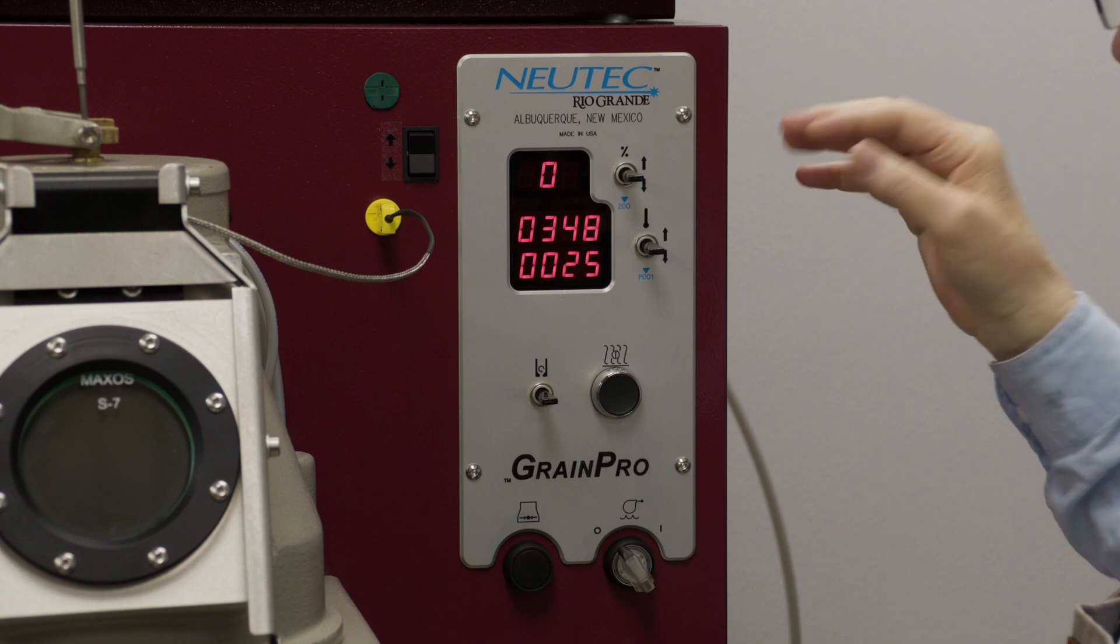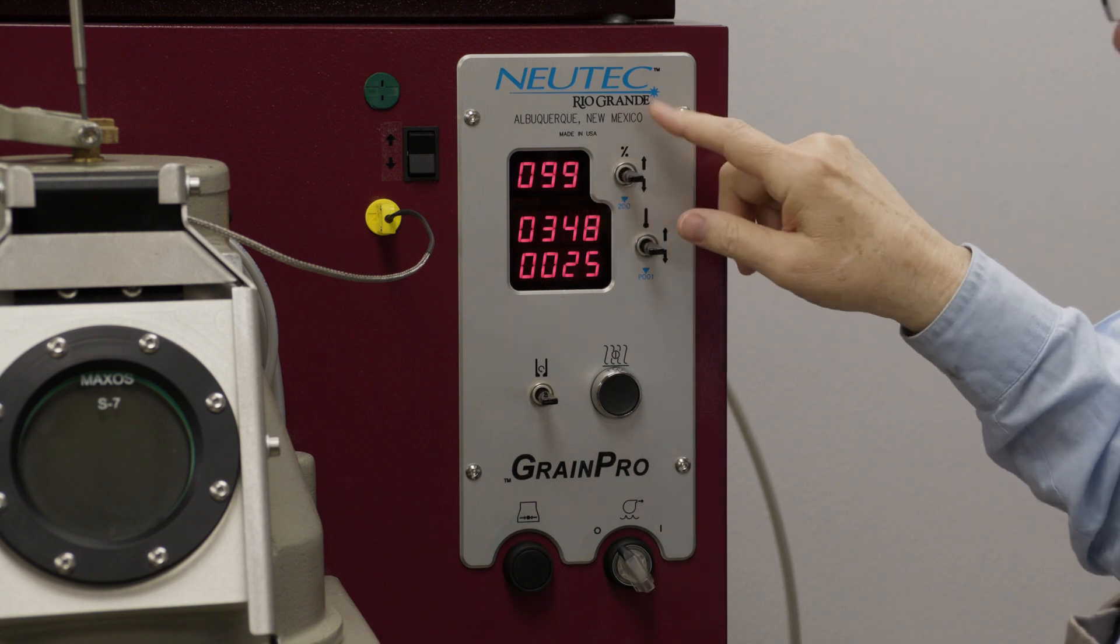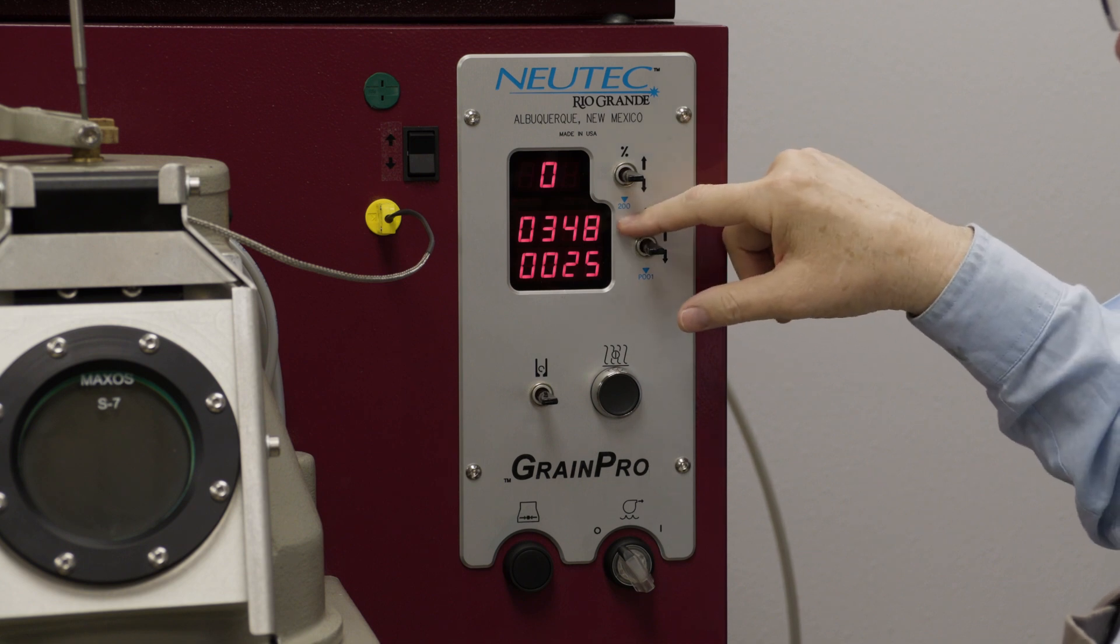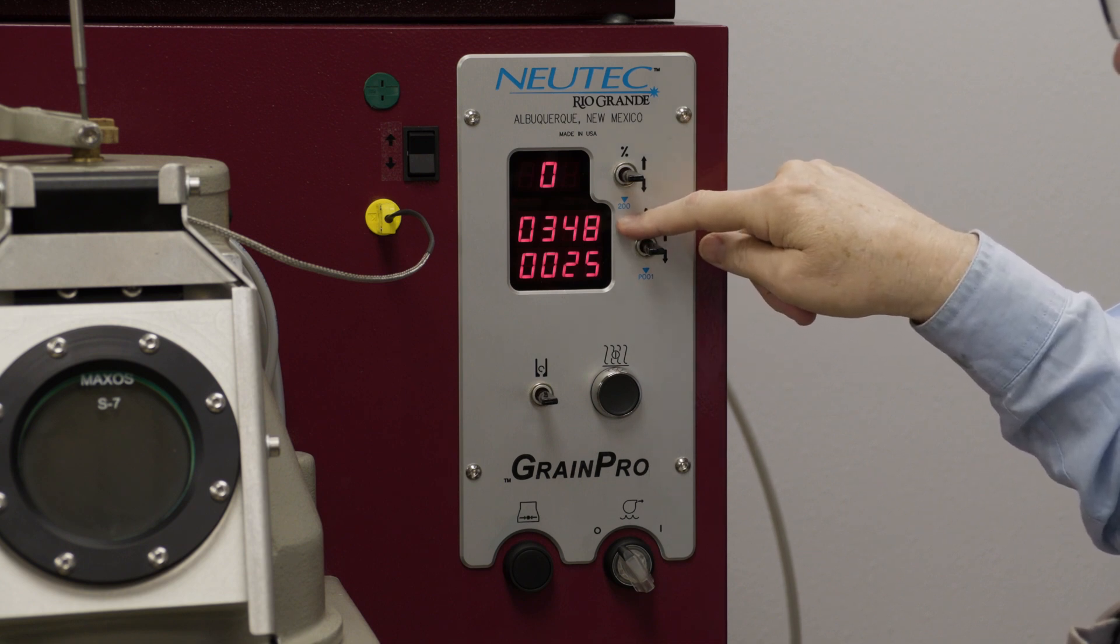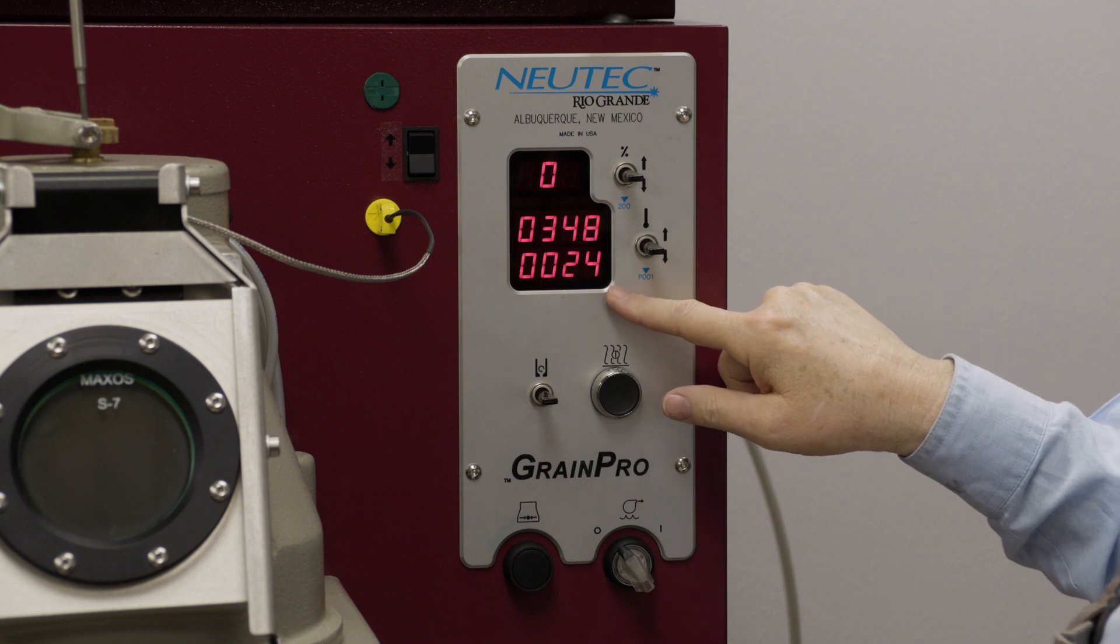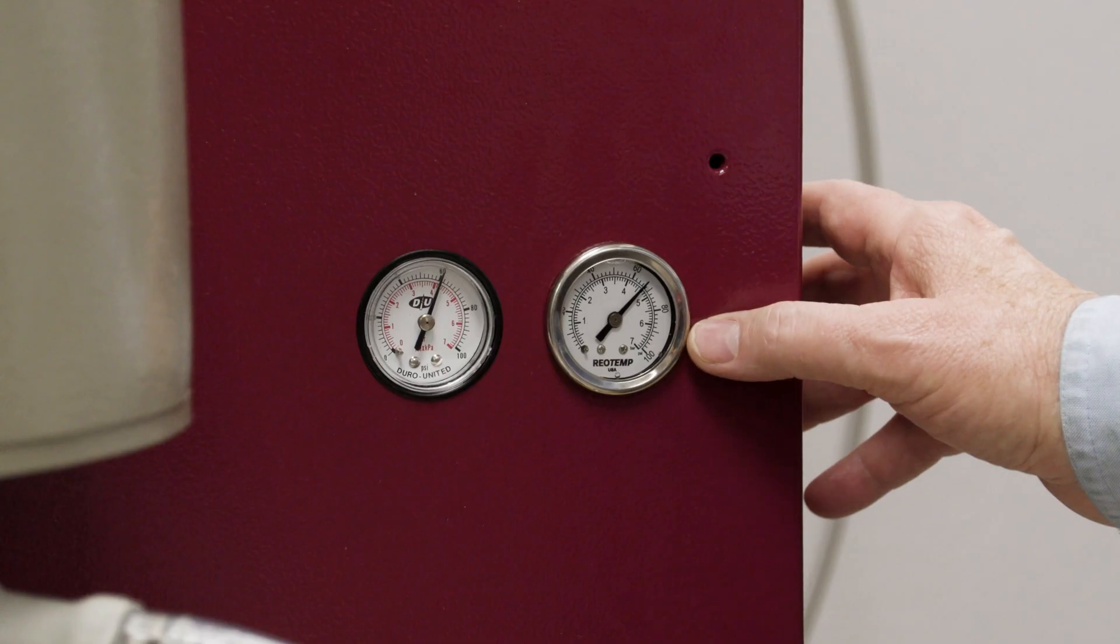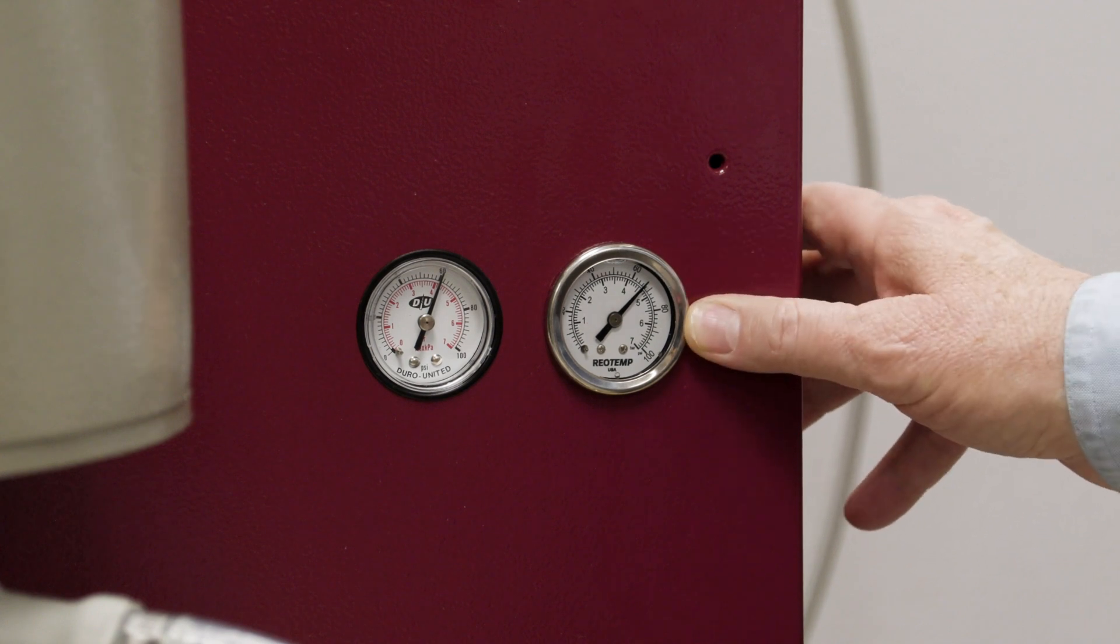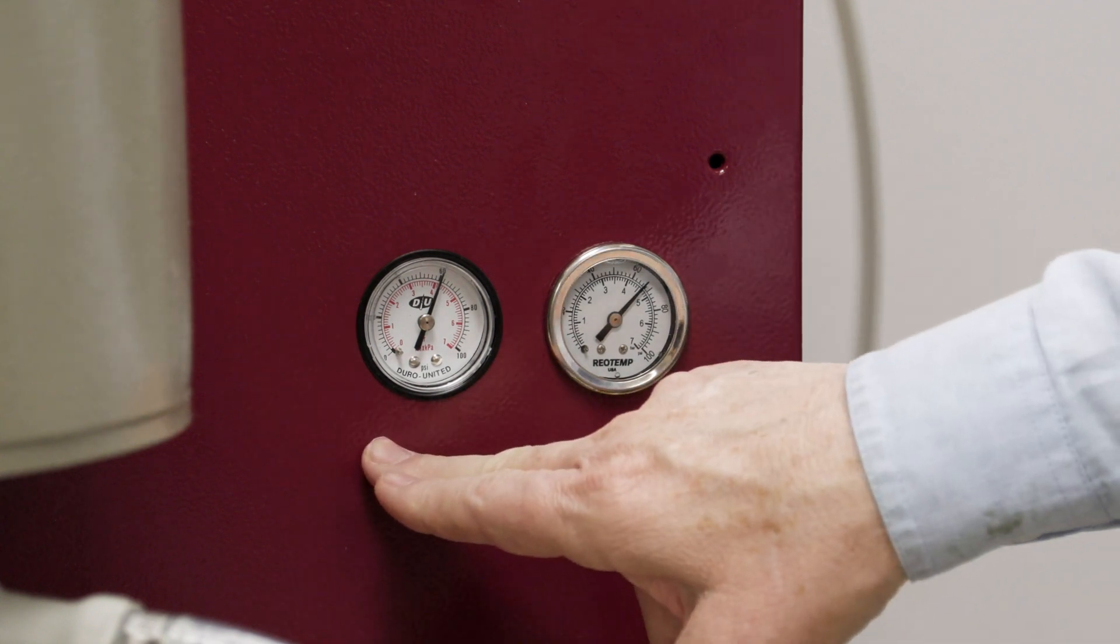The next thing you're going to want to notice is your power percentage on the display. You're going to set it to 100. Here's the set temperature. Right now it's in Celsius. And this is the actual temperature that it is at the moment. Now you'll notice that both gauges are indicating and working. The one on the right is for the water. The one on the left is for the gas.